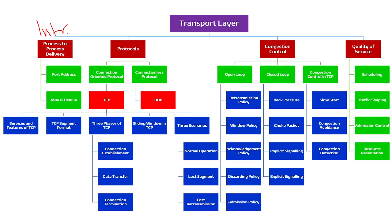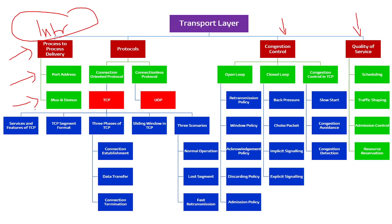The three main categories are: the introduction, the protocols — what are all the things we are going to study in the transport layer — how congestion control is being implemented, and how we are going to maintain the quality of service. In the introduction part, which we can call process-to-process delivery, we are going to discuss what is meant by port address and how a segment is being multiplexed or demultiplexed.